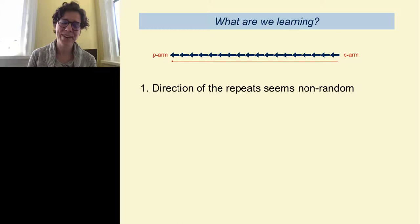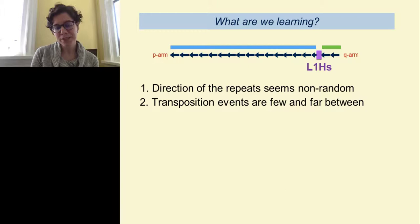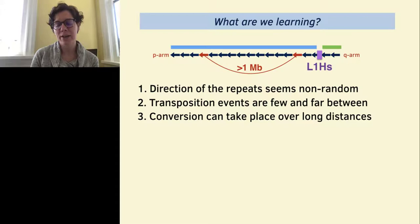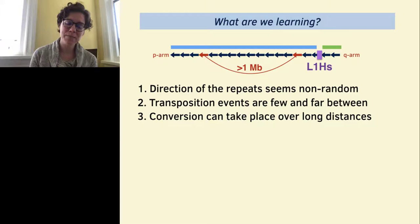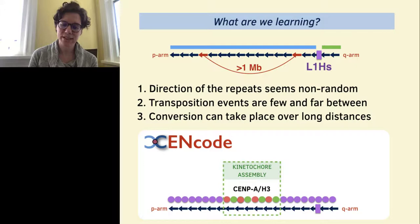What are we learning? As you get into an array almost three megabases in length, the directionality of repeats seems very non-random — they go in one direction without inversions for the X, matching our PacBio datasets. Transposition events are few and far between — we found evidence for only one LINE-1 element in the X array. Gene conversion can take place over long distances; some higher order rearrangements I expected to be close together are in fact greater than a megabase apart. By constructing these high-resolution maps, we can begin mapping epigenetic and transcriptional information, much like what the ENCODE project tried to do — understanding functional relationships between epigenetics, transcription, and genomics.